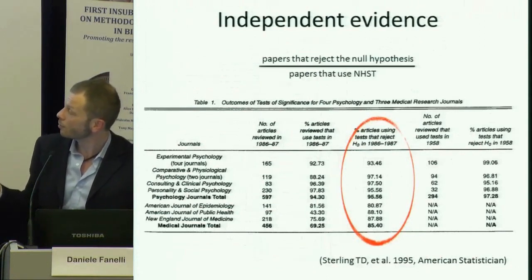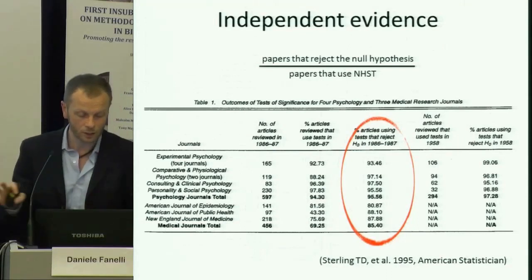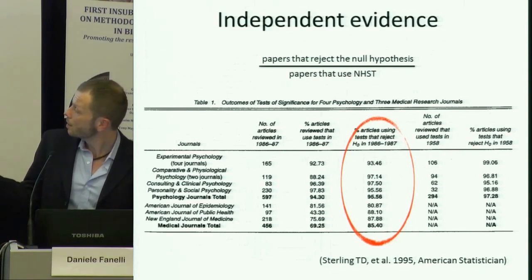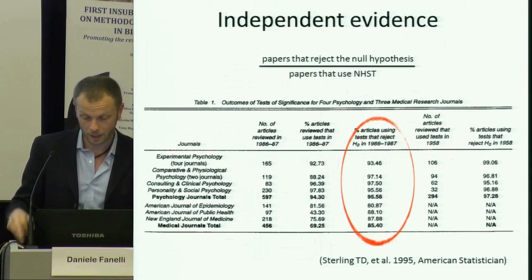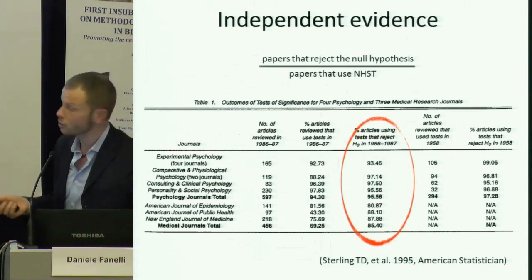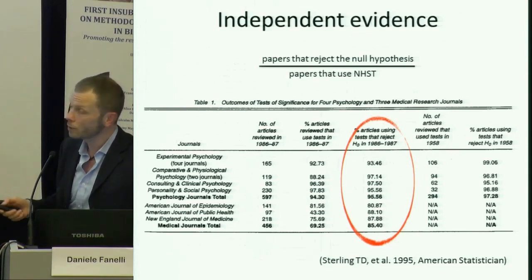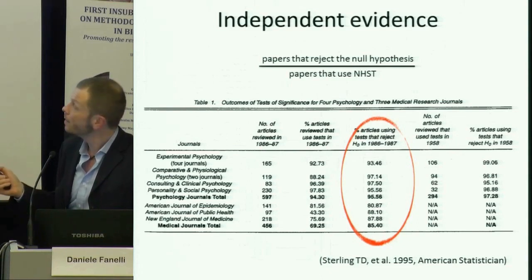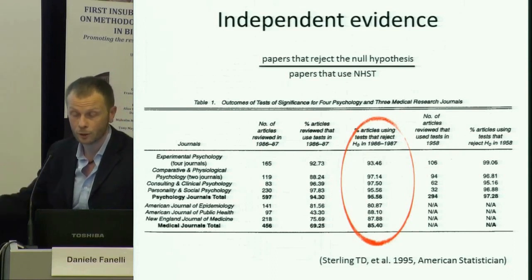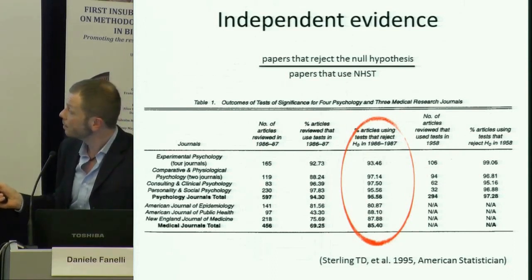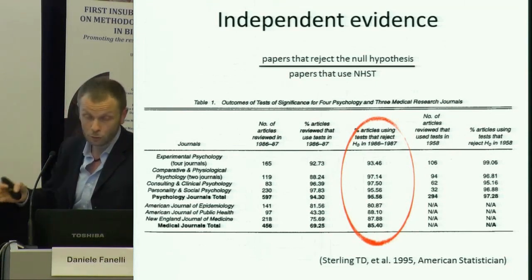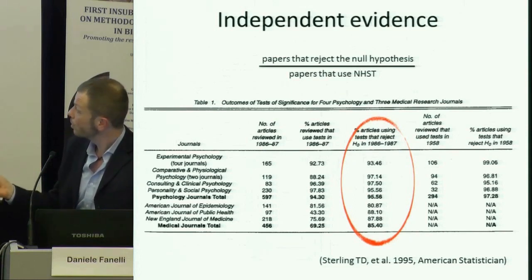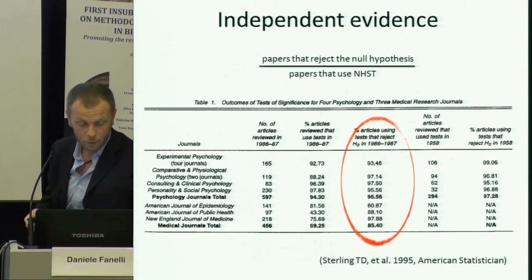If you look at how many positive as opposed to negative results appear in different disciplines measured in this way, at one extreme you have space science where 70% of studies were positive and 30% were negative. At the other extreme, you have psychiatry and psychology in which over 92% of studies reported support for whatever hypothesis they were testing — so practically anything published as a test for a hypothesis would report support for it. These figures are not too dissimilar from what other similar studies have done. Stirling, the same statistician mentioned as a pioneer of publication bias research, in 1995 published a small survey looking at papers in psychology and medical journals, finding that 85% of medical journal studies and 96% of psychology journal studies reported rejection of the null. These are clearly irrational, far too high values.